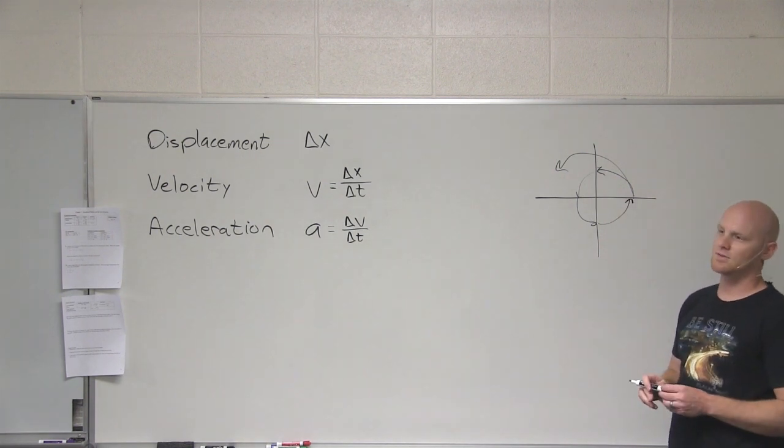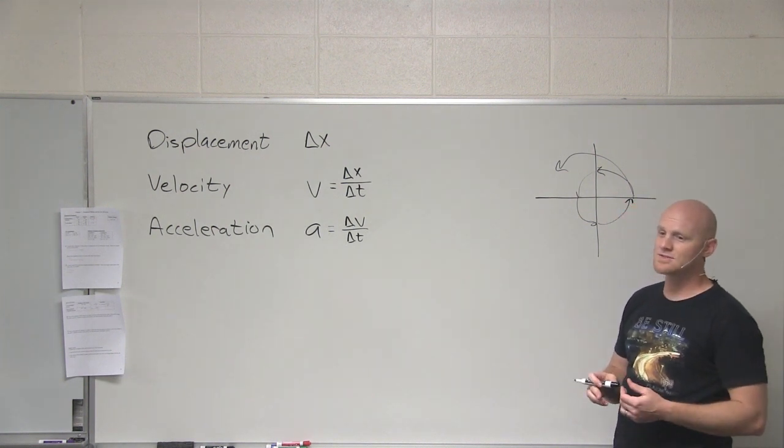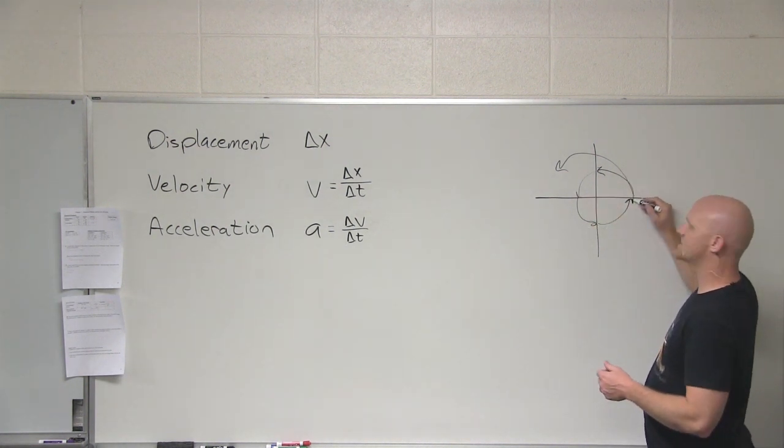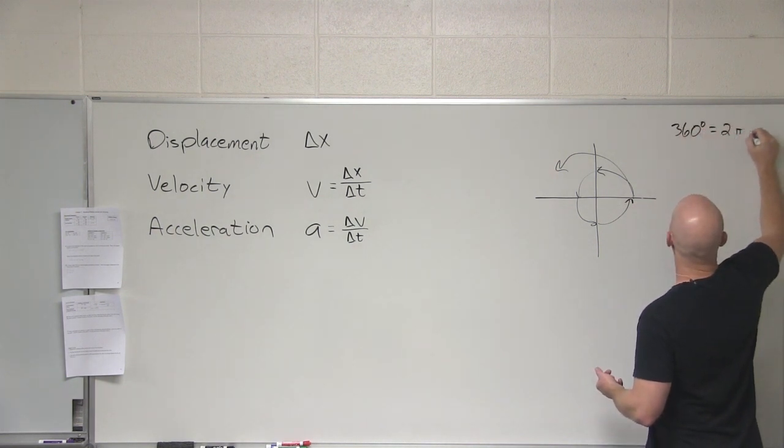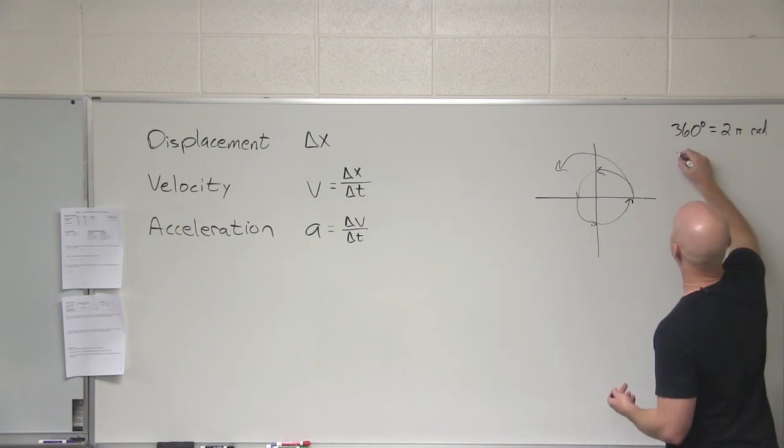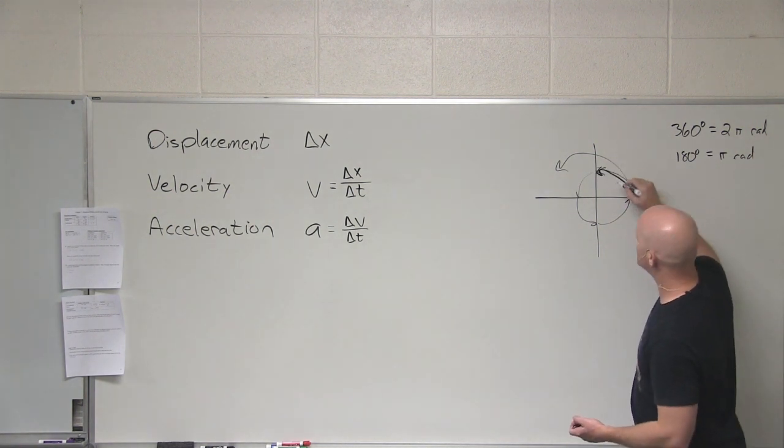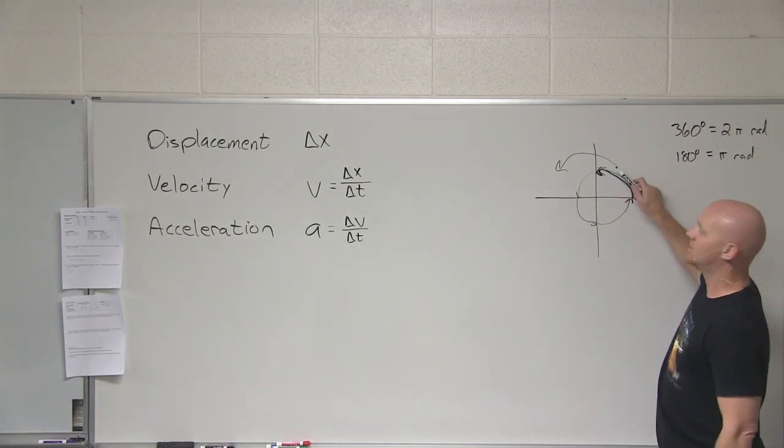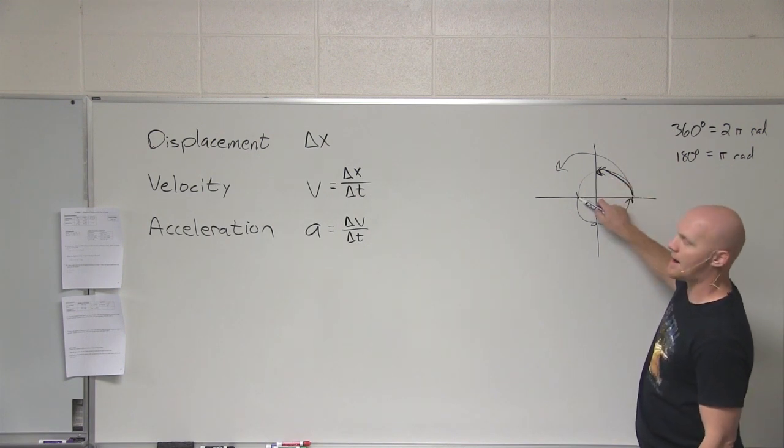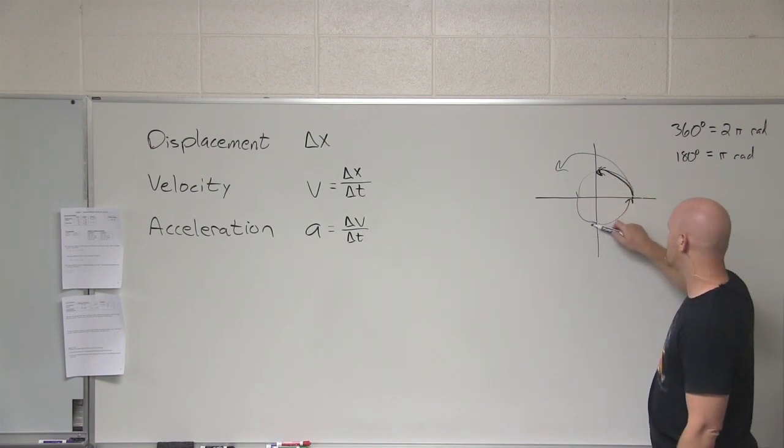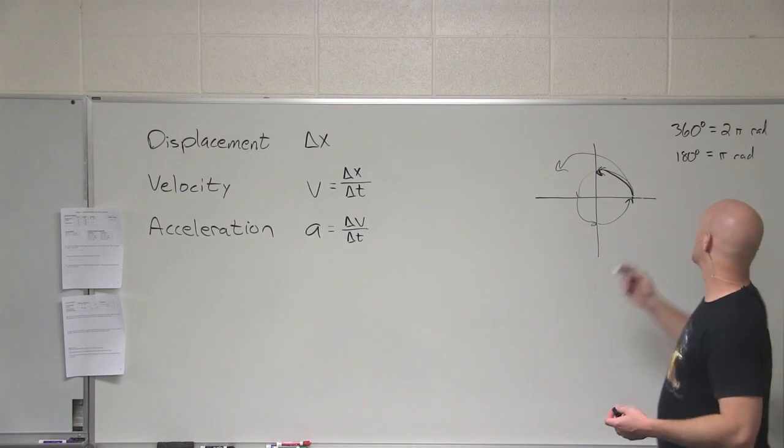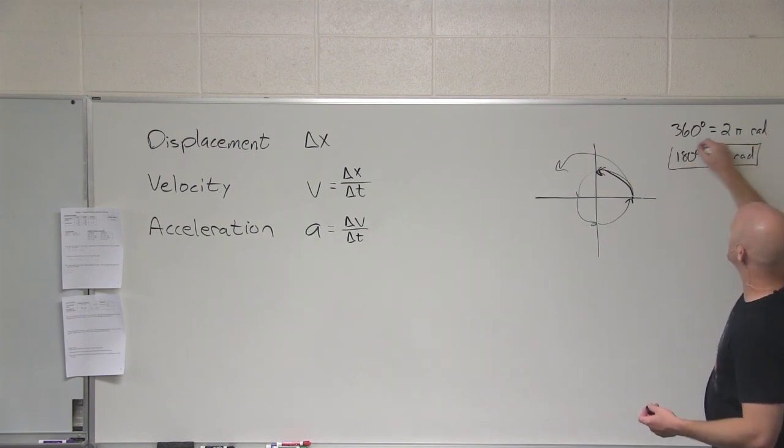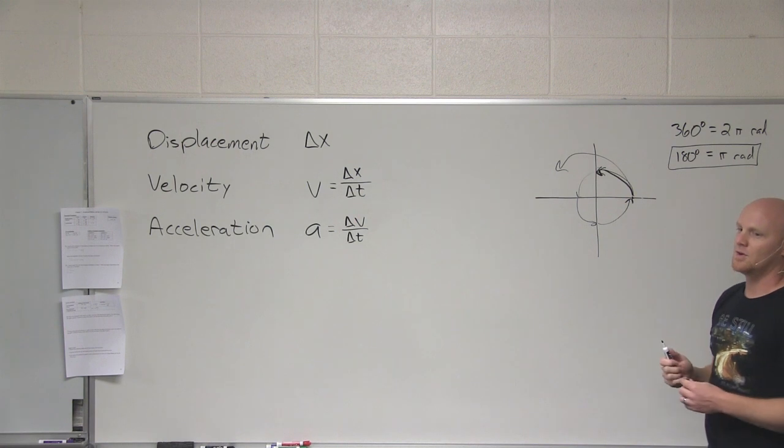But those are in degrees. And the SI unit for angles is not degrees. We're going to be using radians. So one full circle, 360 degrees, is the same as 2 pi radians. That means 180 degrees is equal to pi radians. So as we go around this far, that's not 90 degrees, that's pi over 2 radians. And to 180, that would be pi. To 270, that would be 3 pi over 2. And to 360, that's 2 pi.